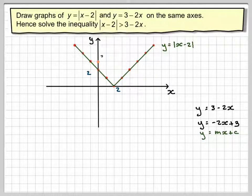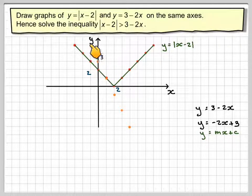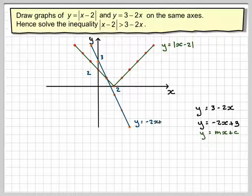So marking on the point 0, 3, a gradient of minus 2, that's what the m stands for. For every one along we go 2 down, the next point will be there. Every one along we go 2 down, the next point will go there. Every one along, 2 down, etc. Going one back will give me that point there, drawing on our graph.